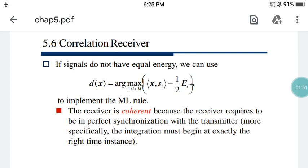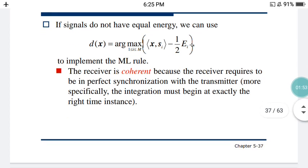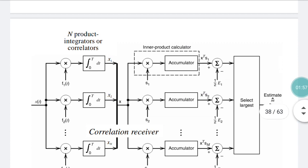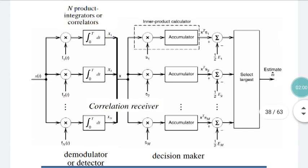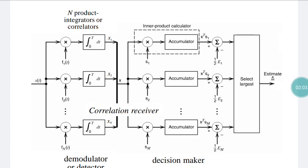The circuit entirely represents how the correlators and integrators are working. In the left section of the diagram, x(t) is taken and multiplied with basis functions f1, f2, f3, f4 up to fn using multiplier circuits. Each multiplier circuit multiplies x(t) with f1, f2, up to fn, producing outputs x·f1(t), x·f2(t), x·f3(t), and so on.